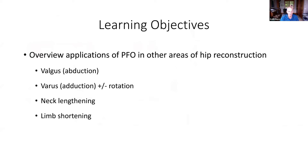Each of these will have a custom solution. We'll do a valgus or abduction, varus or adduction, with or without rotation — Mike Miranda is going to treat that topic later. We'll also do a true or absolute neck lengthening and then a limb shortening.